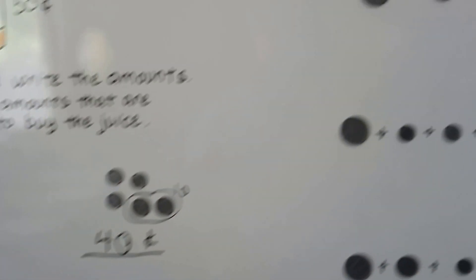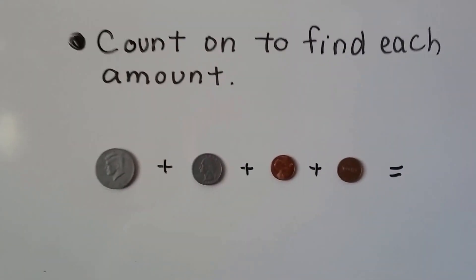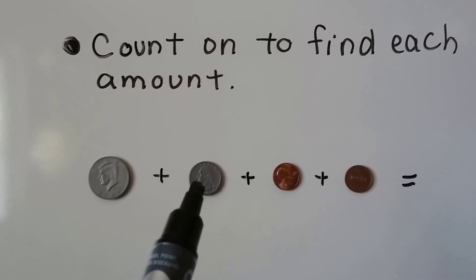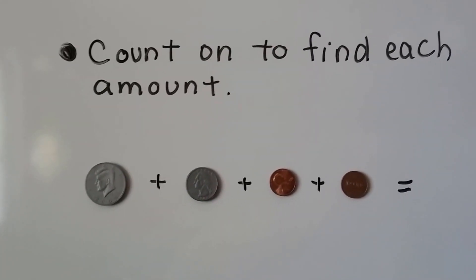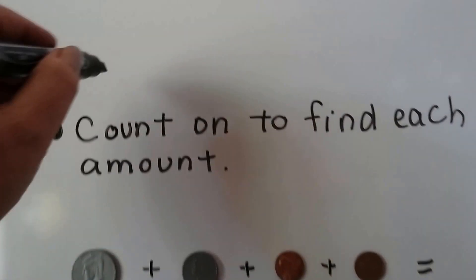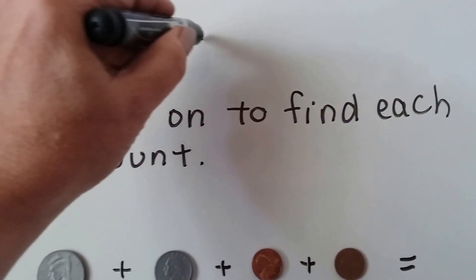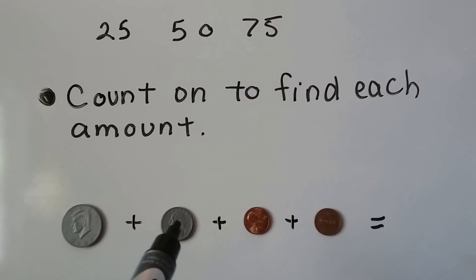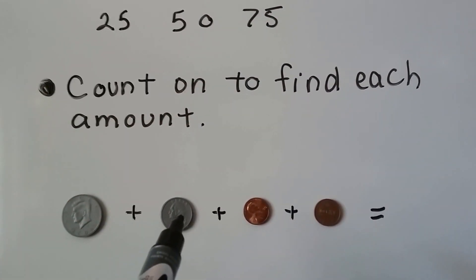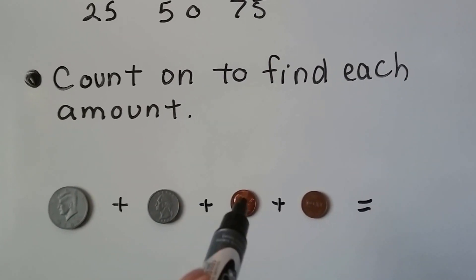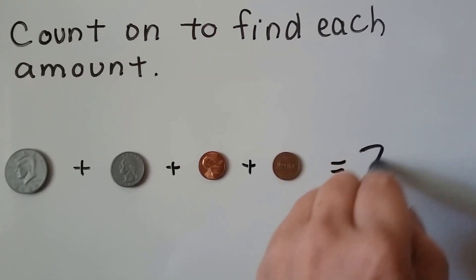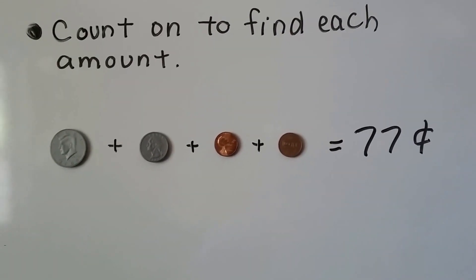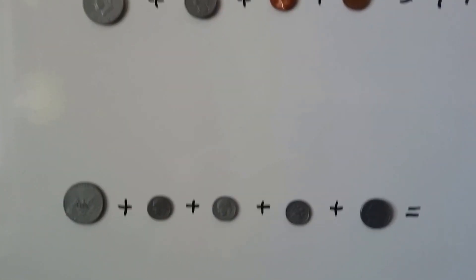Now let's count on to find each amount. We have a half dollar — that's 50 — a quarter — that's 25 — and two pennies. Counting by 25s: 25, 50, 75. If we're already at 50, another 25 brings us to 75. Then 76, 77. A half dollar, a quarter, and two pennies is 77 cents.